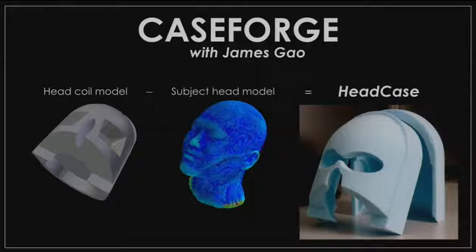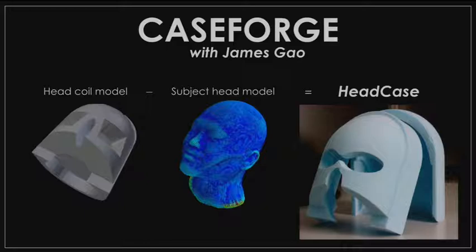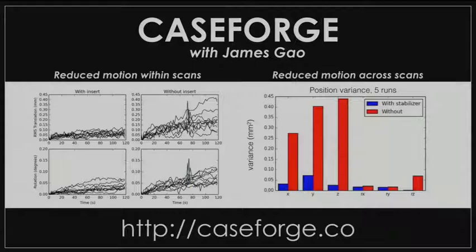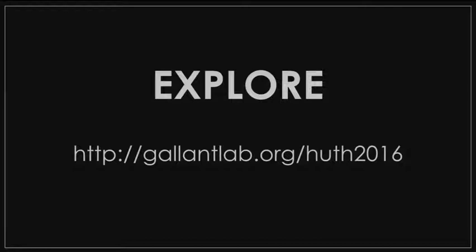I wanted to mention one thing — keeping people still is a very tricky thing. I really enjoyed the talk earlier about voluntary head fixation in mice and rats. We do that in humans too. The way we do this is we 3D manufacture a helmet that perfectly locks people in place by taking a subtraction of the head coil and their head, so this is a perfectly fitted helmet that we can use to keep people within about 0.1 millimeters of where they should be. This really locks people down and we're starting a company to sell these things. You should all check out this website where you can explore the dataset I showed with the brain maps — you can click on voxels and see what they represent. This uses visualization software we've developed in the lab.